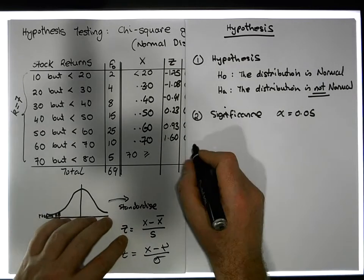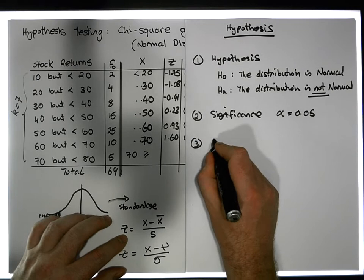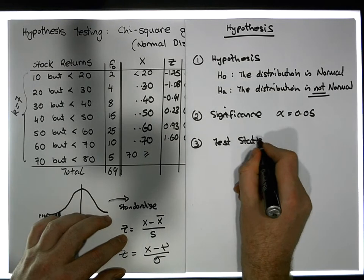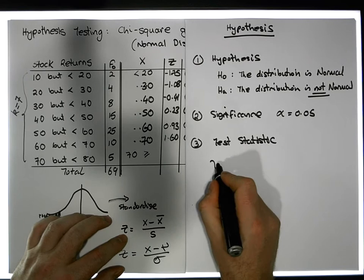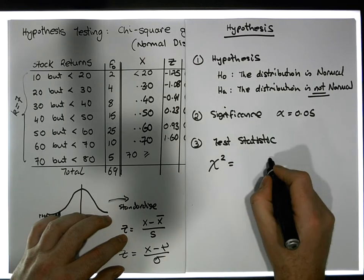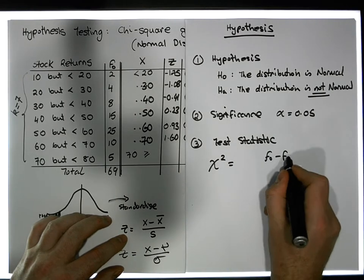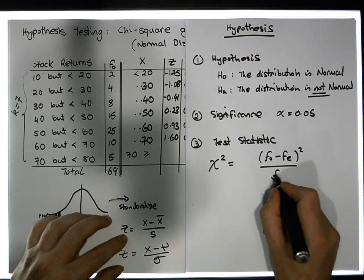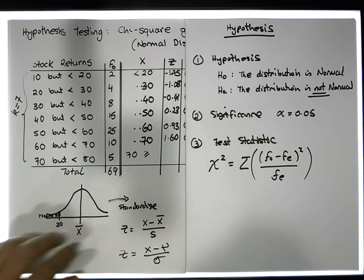Step 3 is to develop our test statistic. As I said earlier, chi-squared is equal to the observed frequencies minus the expected frequencies, squared, divided by the expected frequencies. And it's that for all of them, so we need to do that calculation.